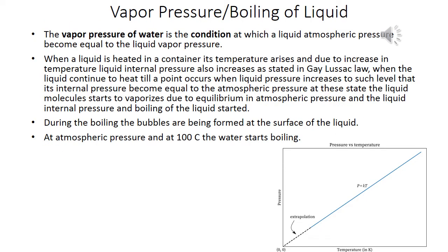The vapor pressure of water is the condition at which atmospheric pressure becomes equal to the liquid vapor pressure. When a liquid is heated, its temperature rises and, due to the increase in temperature, the liquid's internal pressure also increases, as stated in Gay-Lussac's law. When heating continues to a point where the internal pressure equals atmospheric pressure, the liquid molecules start to vaporize and boiling begins.